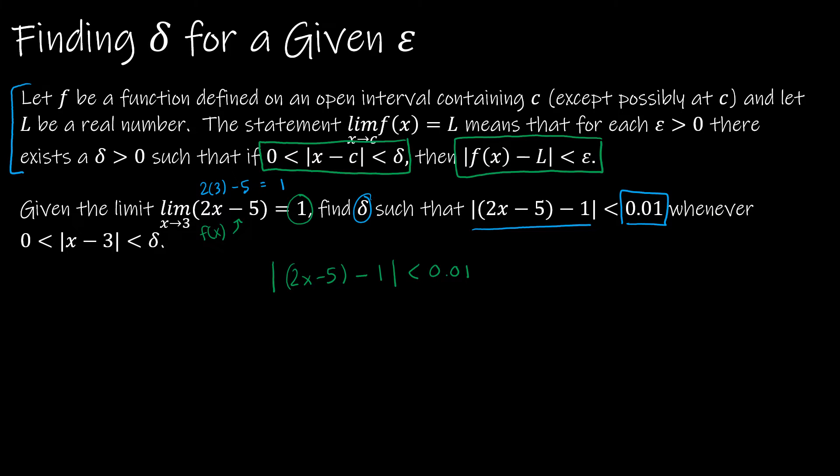So I have 2x minus 5 minus 1. So I get 2x minus 6, because minus 5 and minus 1 gives me minus 6. Well, 2x minus 6, I can rewrite as 2 times the quantity of (x - 3). And I can divide each side by 2, so I get |x - 3| is less than 0.005, or 5 one-thousandths.